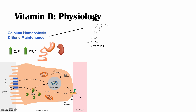Calcitriol can also increase expression of an ATP-dependent calcium pump on the opposite end of the enterocyte. All of this leads to more calcium being brought into the enterocyte and more calcium being pumped into the blood vessel, helping to absorb calcium. We need calcium for bone development and maintenance — our bones are made of calcium and phosphate — so vitamin D is extremely important in ensuring enough calcium for our bones.